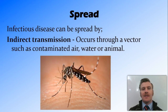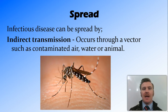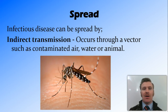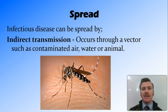Or a disease can be spread through indirect transmission, where there is some sort of vector or intermediary between the two hosts. This could be contaminated air, contaminated water in the case of Giardia and Cryptosporidium, or an animal that carries the disease but is not affected by it — for example the mosquito that carries malaria.